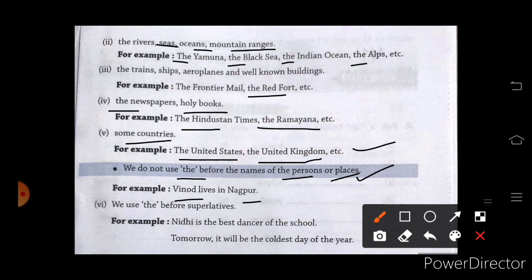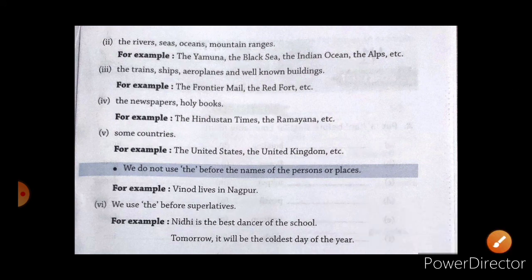We use the before superlative degrees. Superlative degrees ke saath bhi hum the ka use karte hain. Nidhi is the best dancer of the school. Tomorrow, it will be the coldest day of the year. That's our superlative degree. Cold, colder, coldest. Good, better, best. That's all about the uses of articles a, an, and the.